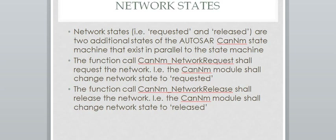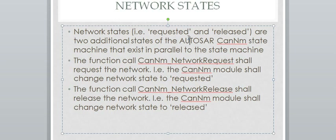Network states: we have two states — requested state and released state. Requested state means that NM frames will be transmitted, and this is achieved by a function called CAN-NM Network Request. Released state means NM frame transmission will be stopped and the ECU will come out of network mode. This released state is achieved by a function called CAN-NM Network Release.